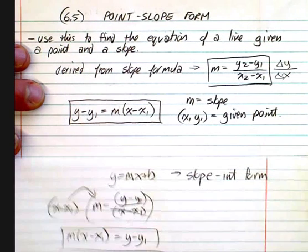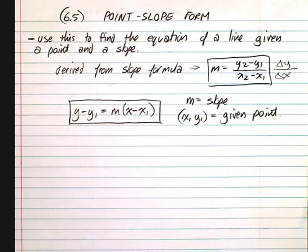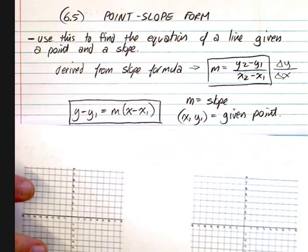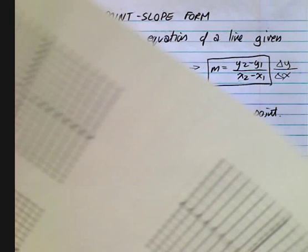Point-slope form is used for finding the equation of a line given a point and a slope. Now let's look at a couple of things.